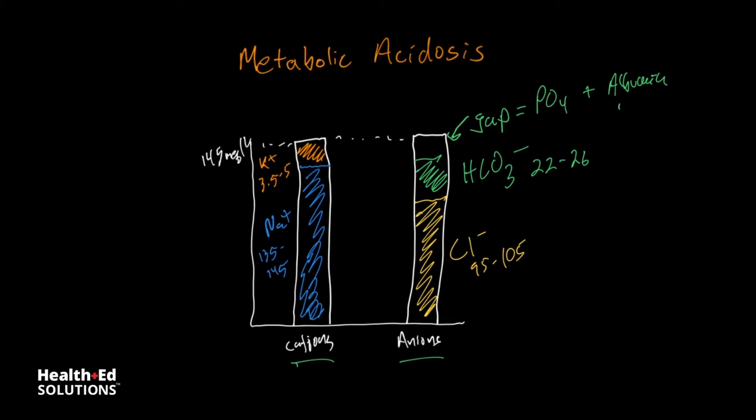So in a normal healthy person, an anion gap will be 16 milliequivalents, plus or minus 4. Now some people calculate the anion gap without including potassium. If that's the case, if you don't include potassium, then you're going to have a normal anion gap of 12 milliequivalents, plus or minus 4.